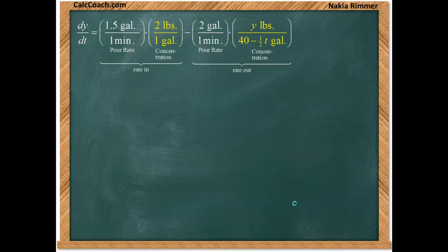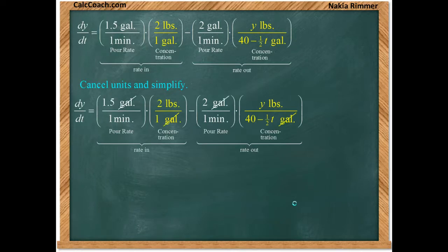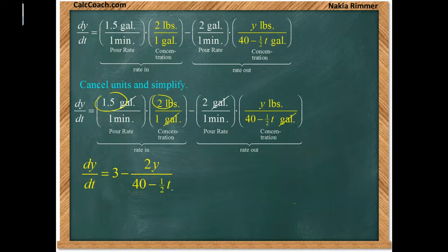Plugging into the template and canceling units — gallons cancel, leaving pounds per minute — we multiply one and a half times two to get three, and put the factor of two over (40 − t/2) for the outgoing term. This gives us the differential equation before simplification.